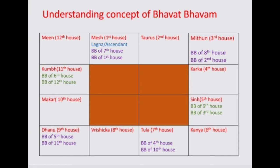Now let us see the Bhavat Bhavam of the 9th house. Count 9 from the 9th house, including the 9th house itself. So: 9, 10, 11, 12, 1, 2, 3, 4, 5. You reach the 5th house. So the Bhavat Bhavam of the 9th house is nothing but the 5th house.